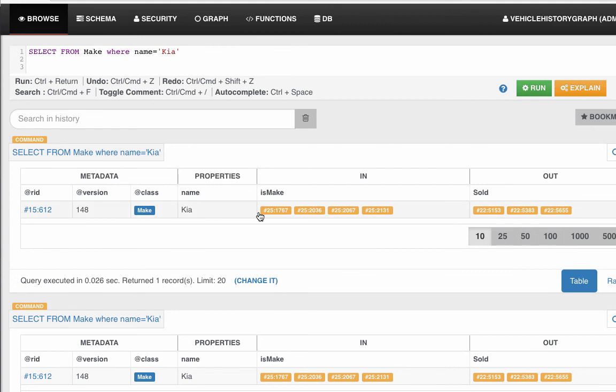So we see one record called KIA of the class make with some in edge information and some out edge information. We can do a traverse in from this vertex.